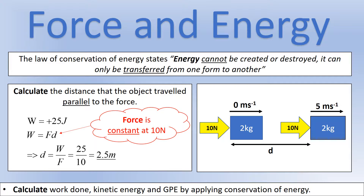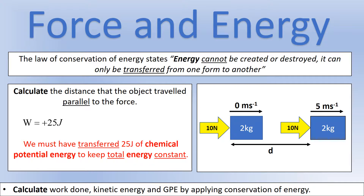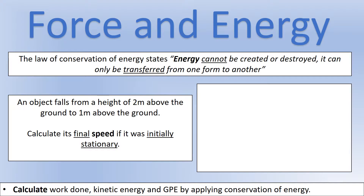It may appear we've gained energy from nowhere, but we know that can't happen — another form must have been transferred. The person pushing is transferring chemical potential energy from food into kinetic energy, so total energy stays the same. That's our first example. For the second example: an object falls from a height of 2 meters above the ground to 1 meter above the ground. We want to calculate its final speed if it started stationary. Pause and sketch this scenario.